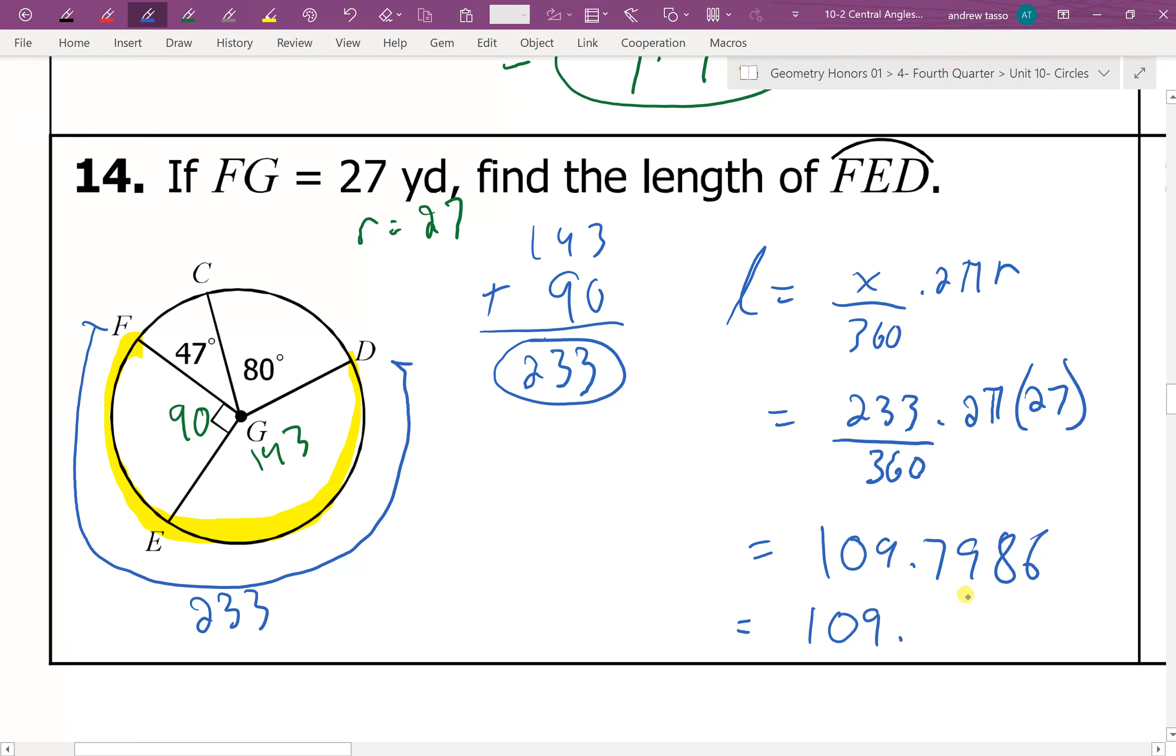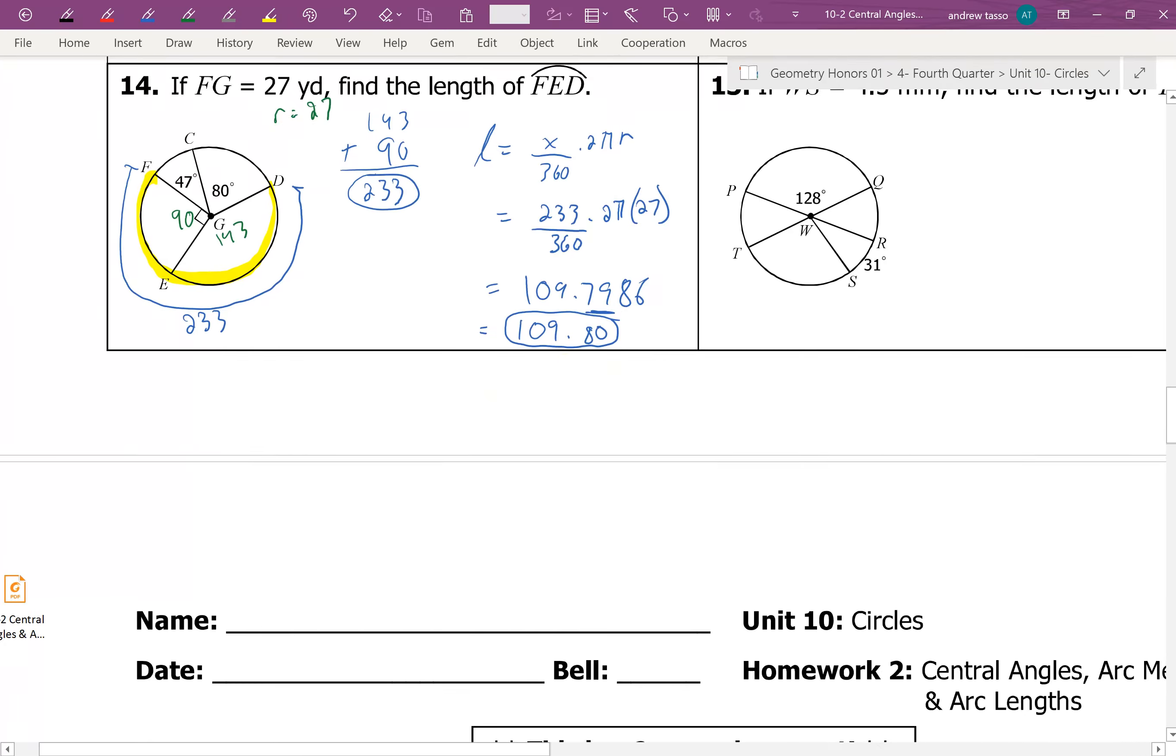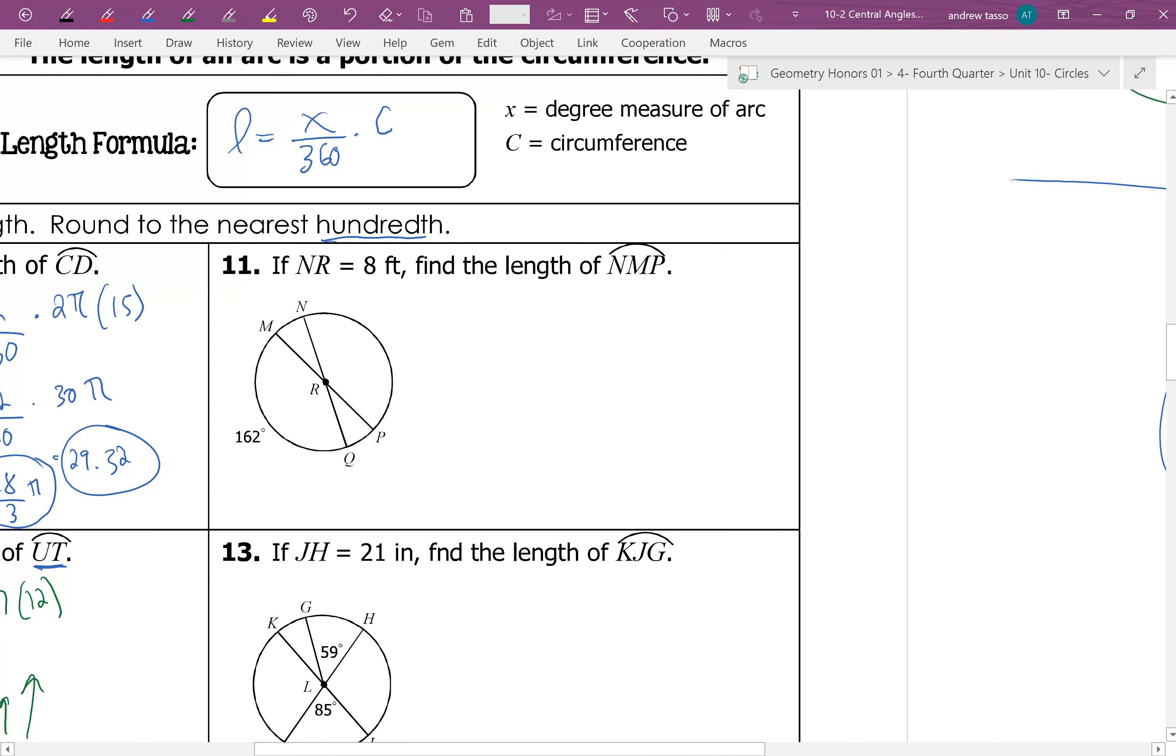we're looking to round off to this place. So we have to check this place. Since it's large, we want to round up. And so we would get to the next number up from 79, which is 80.